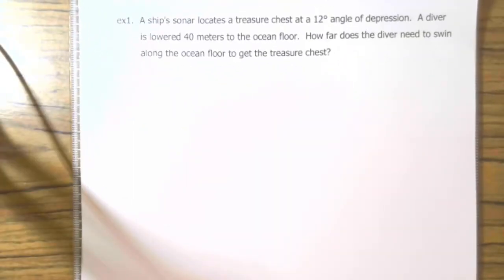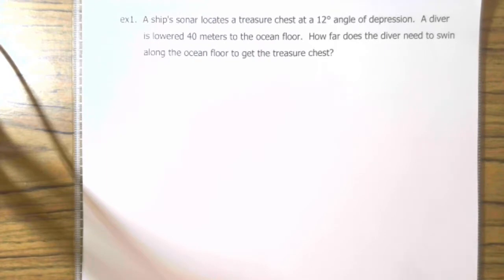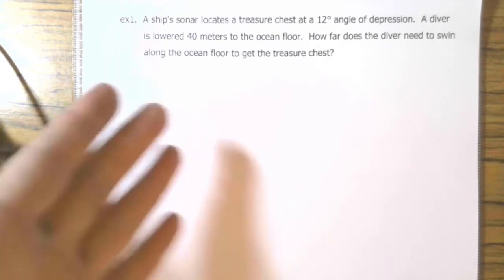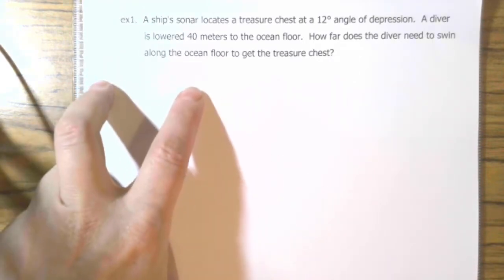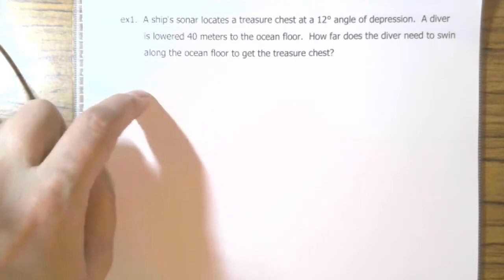Mainly what you need to remember with these problems are that trig functions require right triangles. So when you're drawing your diagrams of the situation, don't worry about things like where on the ship they're measuring. Assume that the ship is a single point. Assume that the treasure is a single point. And you have to make assumptions, the fact that water is parallel to the ocean floor. Otherwise, it wouldn't be possible to use trig functions at all.